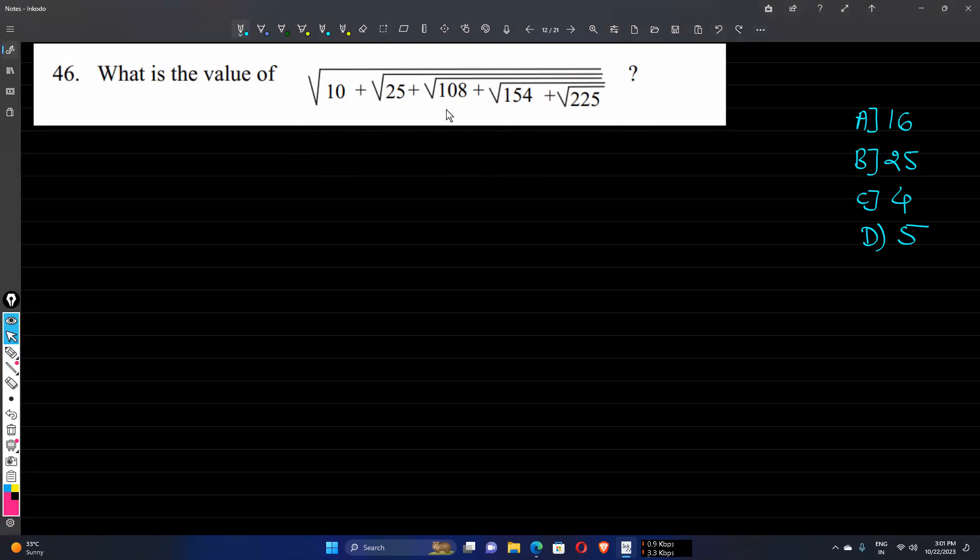So we can write √225 equals to 15, since 225 is the square of 15. Now let us consider we have written 15 here. Then we need to solve this expression: 154 plus 15.